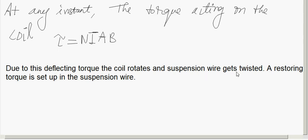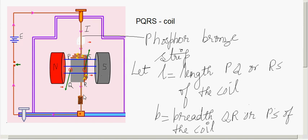When the wire gets twisted, a restoring torque is set up in the suspension wire. We can say the spring provides a counter torque, and this counter torque is given by k into phi, where k is the torsional constant of the spring and phi is the deflection produced.